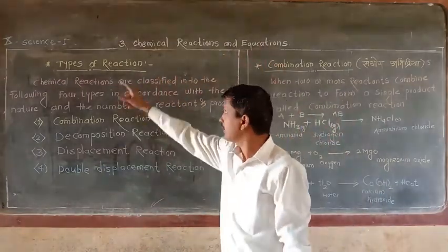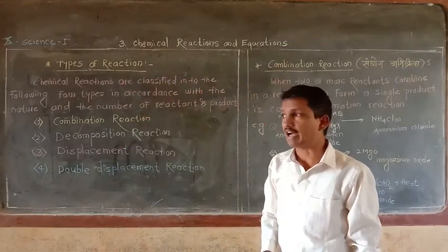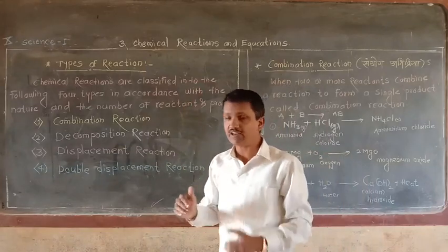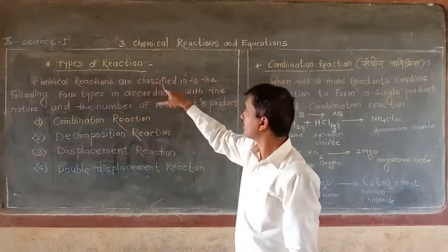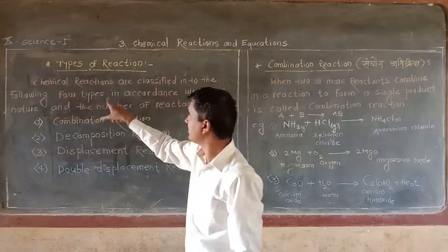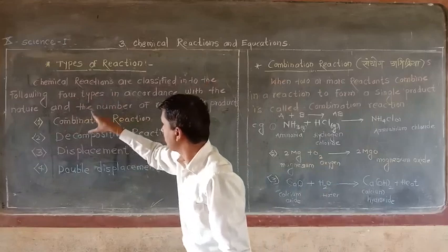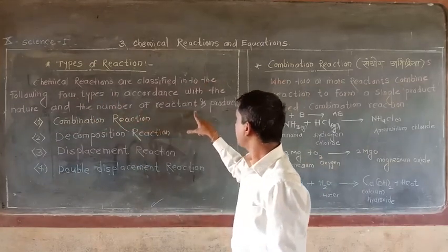The subtypes of reactions, Abhigriyeche Pratha. Chemical reactions are classified into the following four types in accordance with the nature and the number of reactants and products.